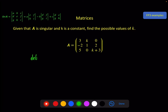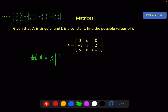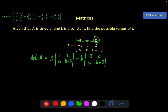Finding the determinant of A following the formula: we take the first element 3, cross out those, and get the 2x2 matrix with entries 1, 2, 0, k+3. Then we take element B with a negative in front of it, cross these out, and get minus 2, 2, 5, k+3. Then we take 0, cross out these two, and get minus 2, 1, 5, 0 — but of course, multiplying by 0 makes it 0, so I'll put it on for completeness.